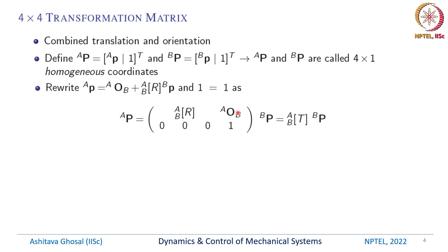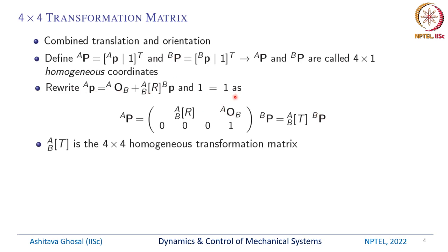We write this 4 by 4 matrix as ABT. So A capital P equals ABT times B capital P. Expanding it gives the original vector equation and 1 equals 1. ABT is the 4 by 4 homogeneous transformation matrix.